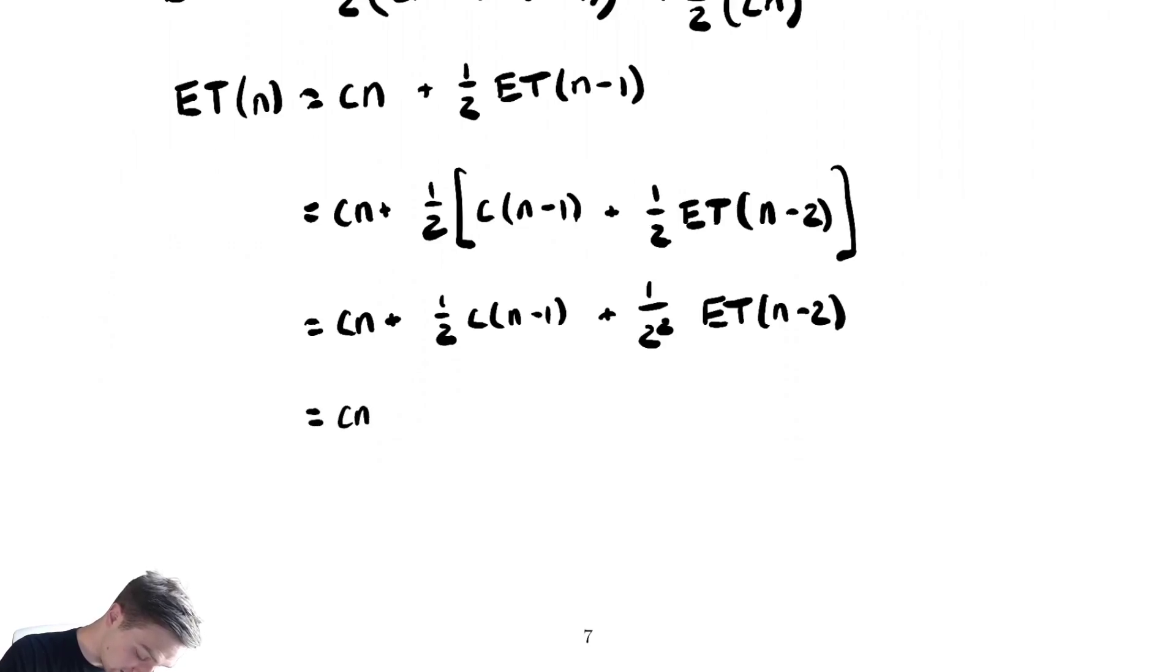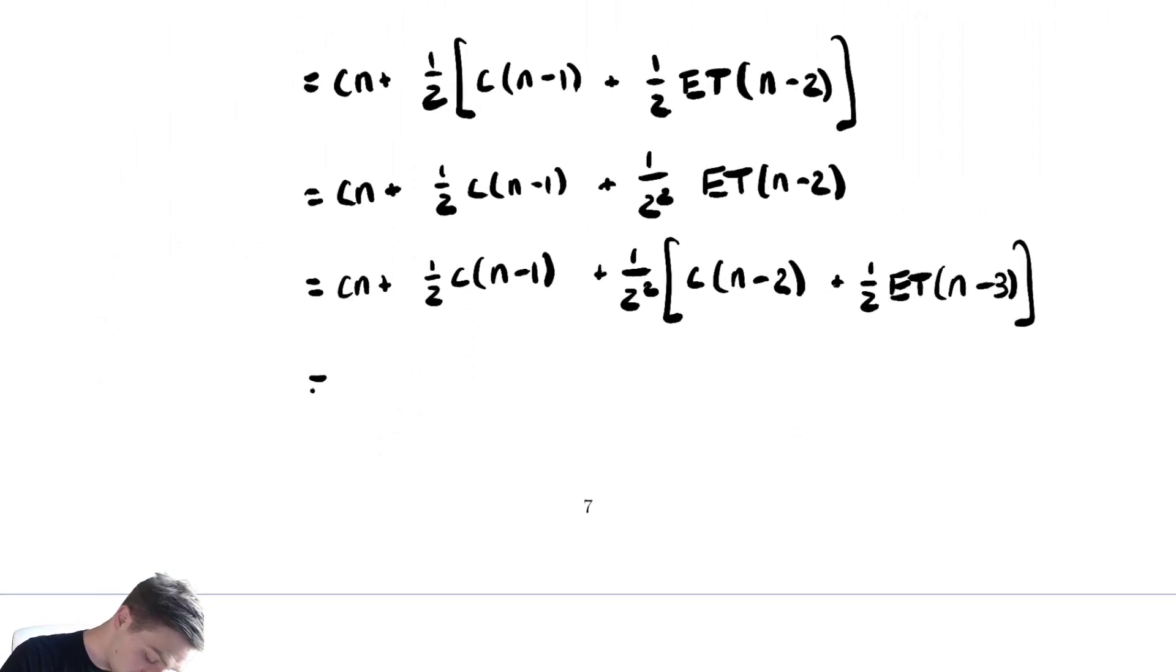Let's make one more substitution. This equals cn plus 1/2 c(n-1) plus 1 over 2 squared times quantity. We have a cn, we're plugging in n-2, so we have c(n-2) plus 1/2 ET(n-3). Let's distribute the 1/2 squared. This equals cn plus 1/2 c(n-1) plus 1 over 2 squared times c times (n-2) plus 1 over 2 cubed ET(n-3).